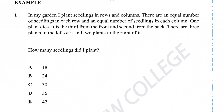Here we see that we have a garden and I'm planting seedlings in rows and columns. There is an equal number of seedlings in each row and an equal number of seedlings in each column. One plant unfortunately dies. It is the third from the front and the second from the back. There are three plants to the left of it and two plants to the right of it. The question wants us to figure out how many seedlings did we plant?